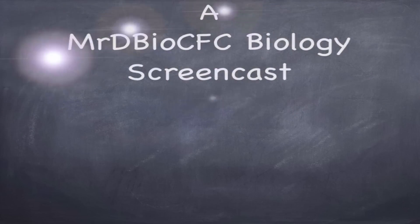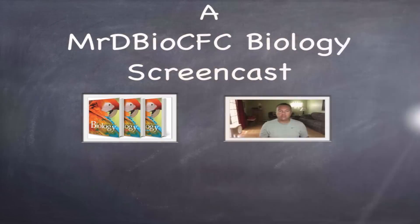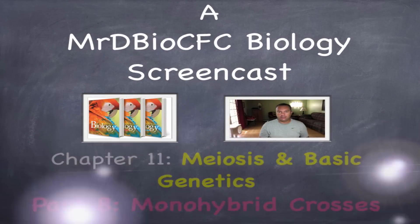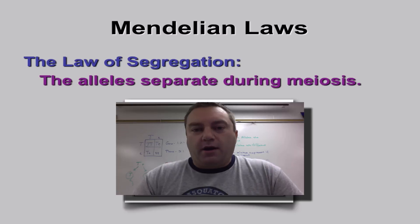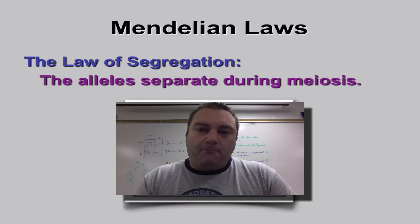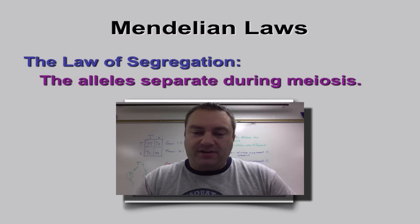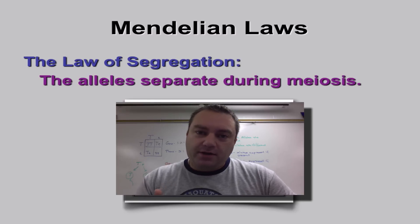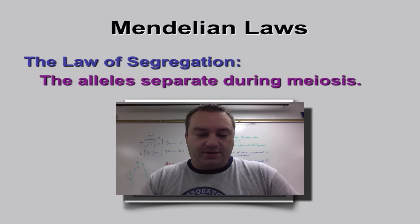Welcome to part 8 from chapter 11. In this episode we're going to go over monohybrid crosses and begin to learn how to do genetic story problems — this is where the math comes in. But first I want to talk about the first of Mendel's two laws, called the Law of Segregation.